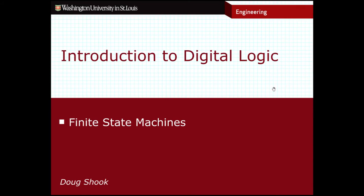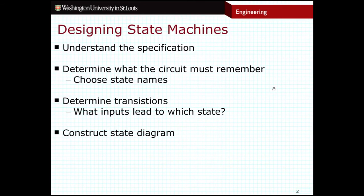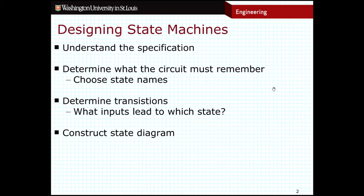Let's talk about how we actually design our finite state machines. The first thing that we need to do is understand the specification. We need to really have a good understanding of the process that we're trying to model. Often times this will be stated in English, so we just write out the description of the process in a few sentences or a paragraph. It's very good to make sure you have a clear understanding of the specification before you proceed.